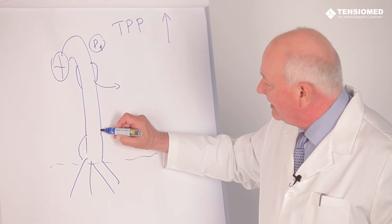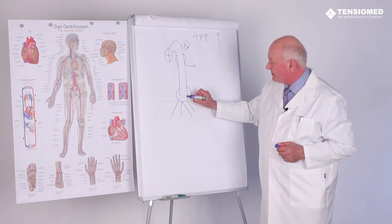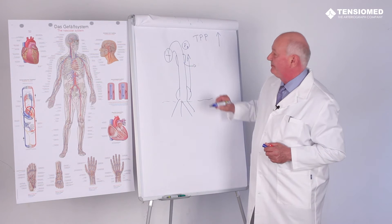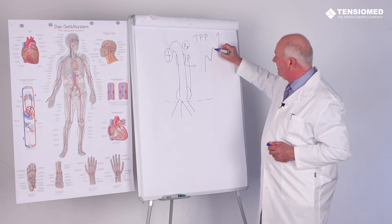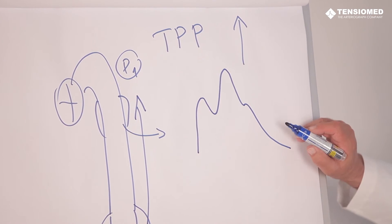Thus, a large part will increase to the reflection site, which is the area of the bifurcation. Then, a large energy will be reflected, so the P2 will be elevated, and then the augmentation index is high.